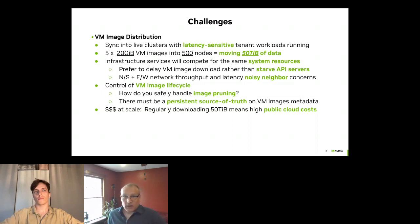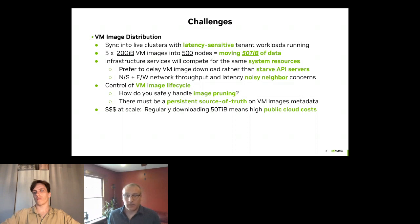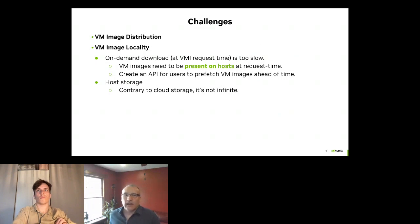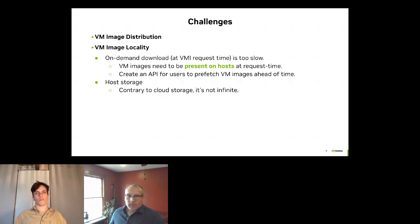Another challenge naturally is cost. We do use some public cloud resources to do parts of our distribution — how does that affect cost? How much traffic and storage is needed? We determined pretty quickly in our POCs that on-demand downloading of VM images at request time would be far too slow for our needs, and that VM images needed to be present in the data center and on the hosts at request time. This led to challenges surrounding capacity planning. You can always ask for more cloud storage in public clouds, but when provisioning data centers, you have to have that very well planned out.